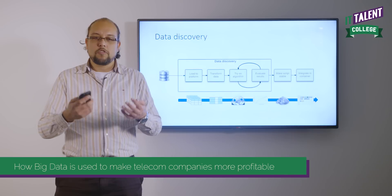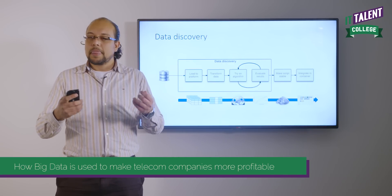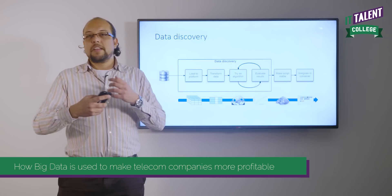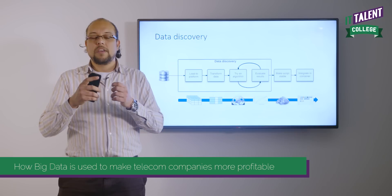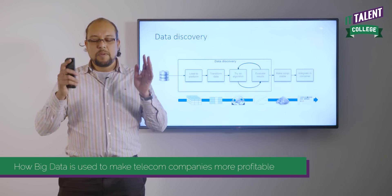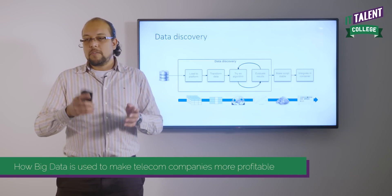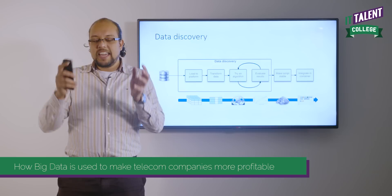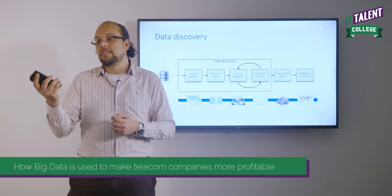At a certain point you decide it's worthwhile to put money behind the model. You then make the script into a stable model that whenever it runs it hardly ever produces errors — for instance, if a column has a bad data type, it uses another column instead. It must be stable so nothing can ever prevent it from running, and if something does go wrong it throws up a flag. You then put it inside a container so it doesn't influence other models running on the same platform, and it knows exactly where to get its data and which CPUs it can use.